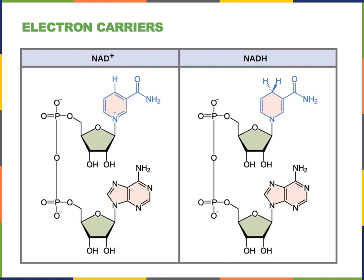As pyruvate is oxidized, an oxidizing agent known as NAD+ will be reduced to form NADH. So NAD+ functions as an oxidizing agent to accept electrons as it is converted to NADH. Then NADH can function as a reducing agent that will be converted back to NAD+ as it delivers electrons to another oxidizing agent. NAD+ and NADH are an example of an electron carrier that will transfer high energy electrons from one metabolic pathway into another.